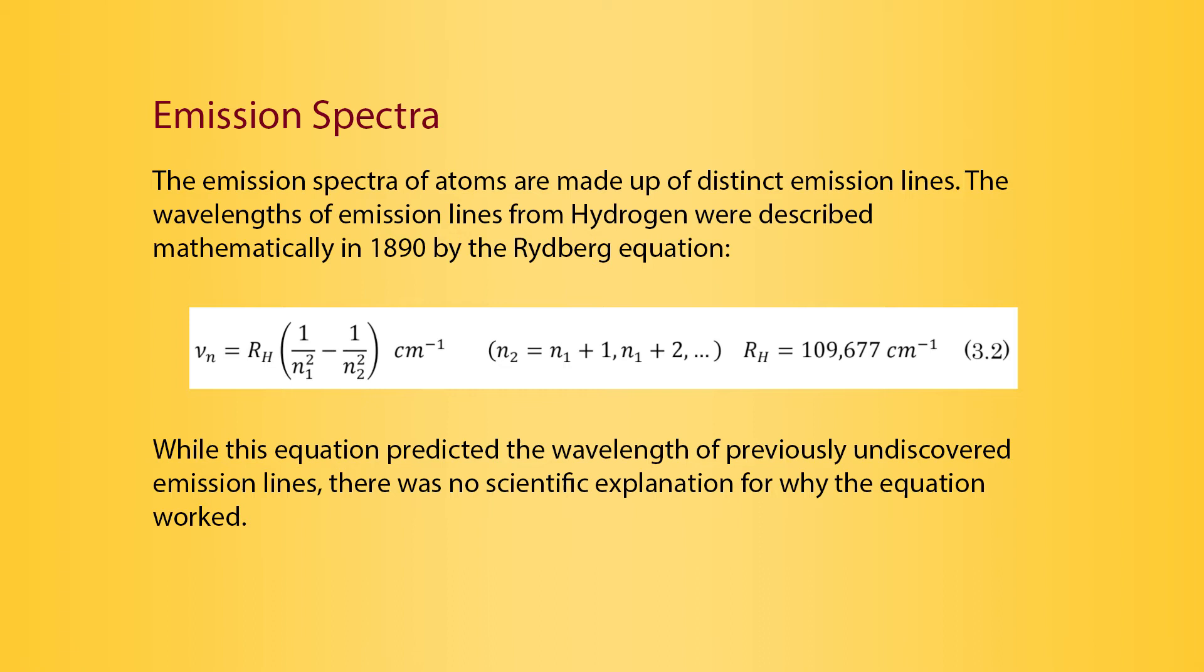The emission spectra of atoms are made up of distinct emission lines. The wavelengths of emission lines from hydrogen were described mathematically in 1890 by the Rydberg equation, shown here. While this equation predicted the wavelengths of previously undiscovered emission lines, there was no scientific explanation for why the equation worked.